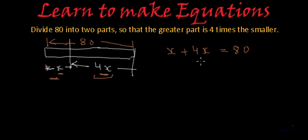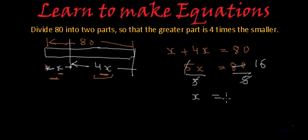So x plus 4x is equal to 80. So x plus 4x is 5x, this will be equal to 80. And if we divide both sides by 5, divide this by 5 and this by 5, this 5 and this 5 will get cancelled and this 5 will divide 80. So 5 ones are 5, 6 are 30. So we will get x is equal to 16.